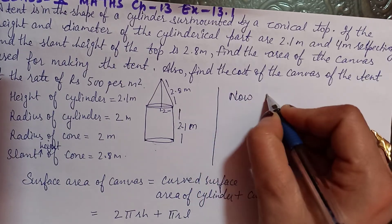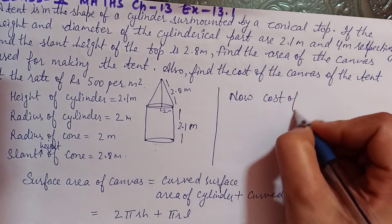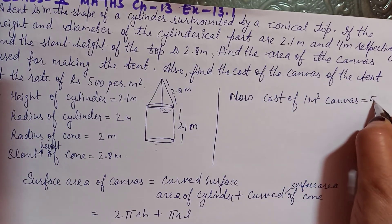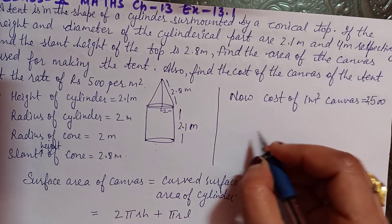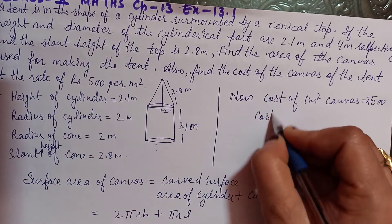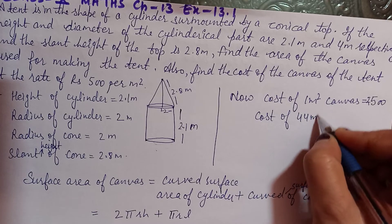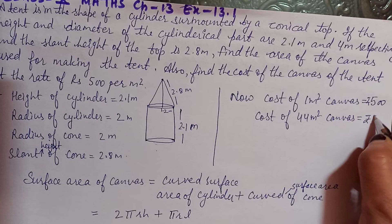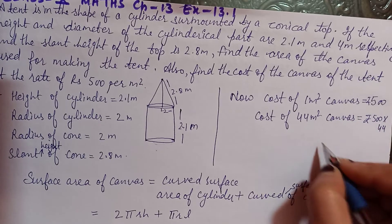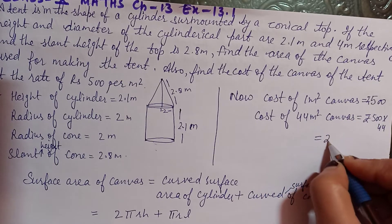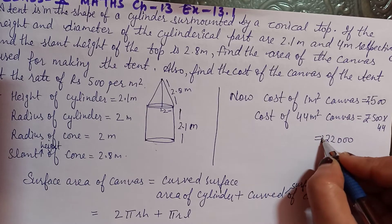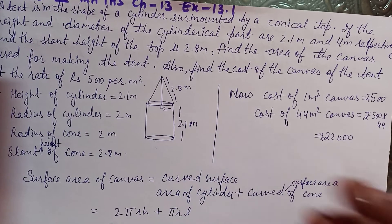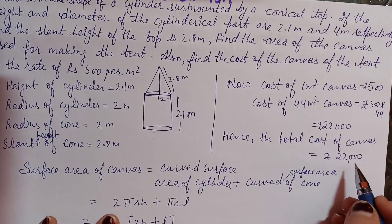Now, cost of 1 meter square canvas is Rs. 500. Cost of 44 meter square canvas = 500 × 44 = Rs. 22,000. Hence the cost of canvas is Rs. 22,000.